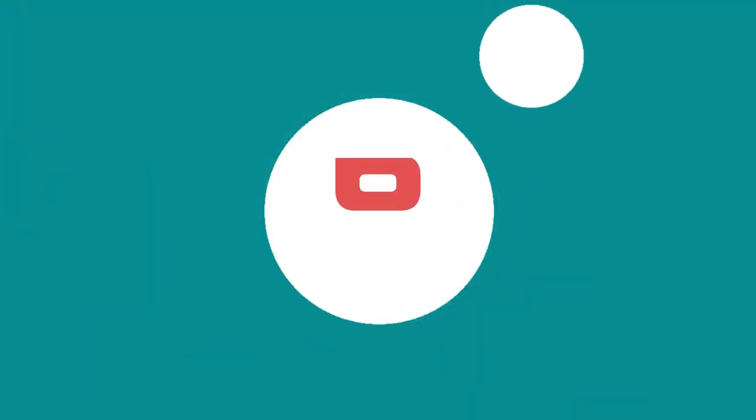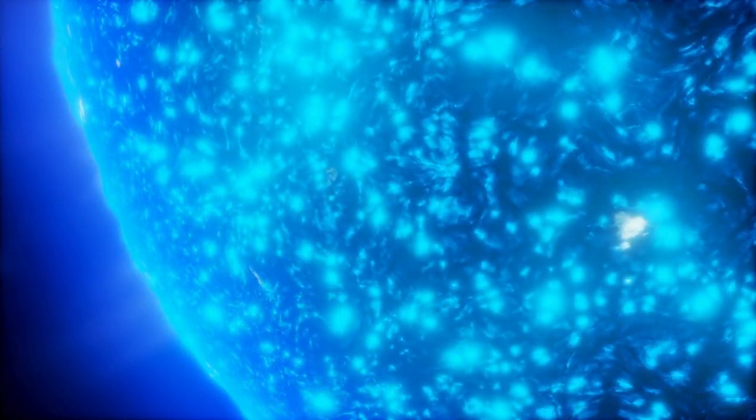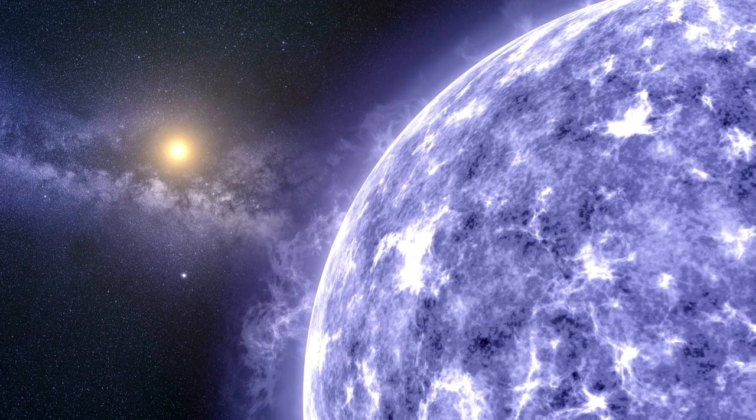Fact number 6. Neutron stars are some of the densest objects in the universe. These stellar remnants are created when massive stars undergo supernova explosions and collapse under their own gravity. Neutron stars can have incredible properties, such as incredibly strong magnetic fields and rapid spin rates.